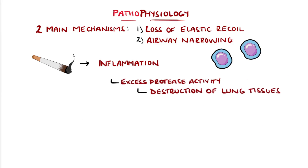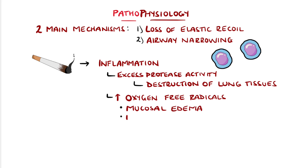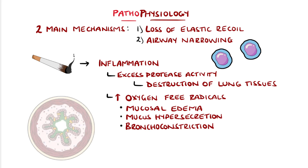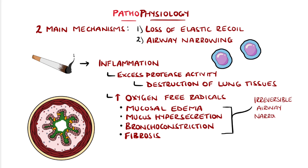The inflammation and recruitment of neutrophils increases oxygen-free radicals, and ultimately also causes mucosal oedema, mucus hypersecretion, and bronchoconstriction, causing the airways to be narrower and so have increased resistance to airflow. These changes are also accompanied by fibrosis, and tend not to be reversible.